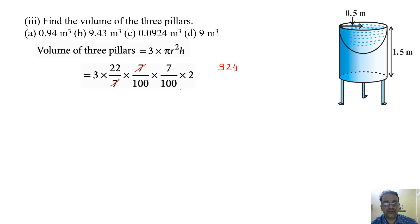Now we will count the number of zeros in the denominator: 1, 2, 3, 4. So 1, 2, 3, 4, you have to point out here. So the final answer is 0.0924 meter cube. Correct option is C.